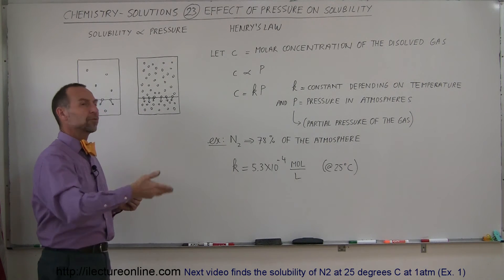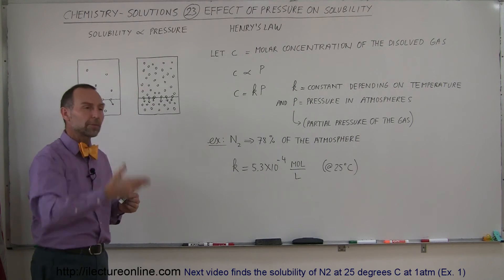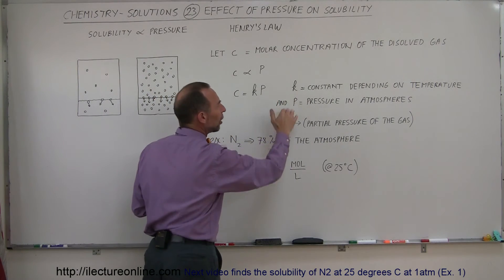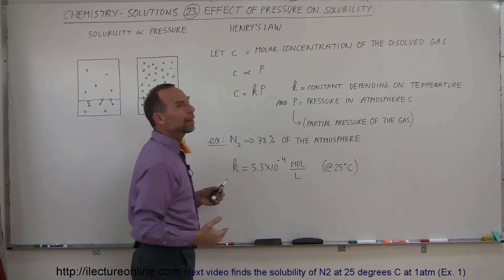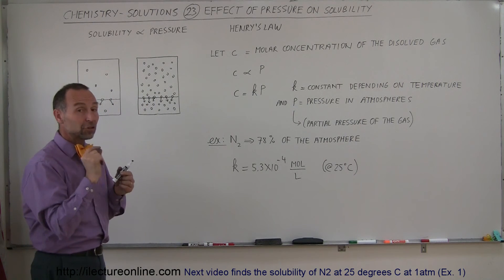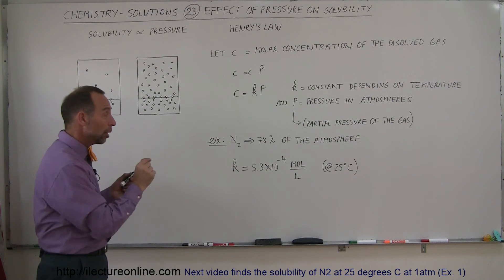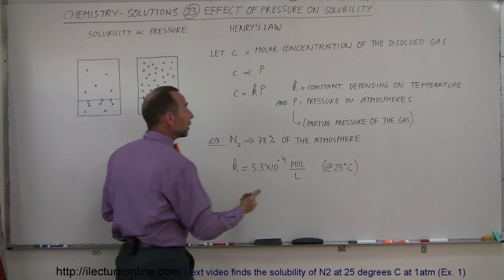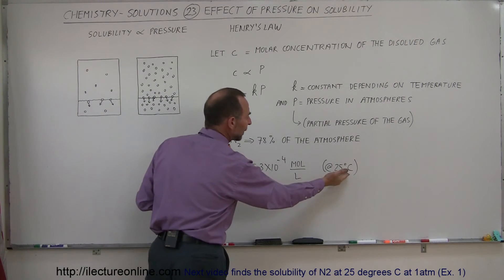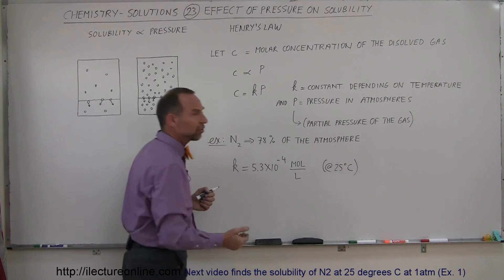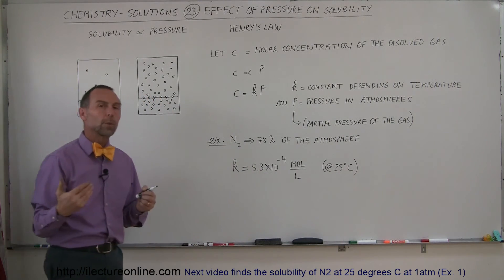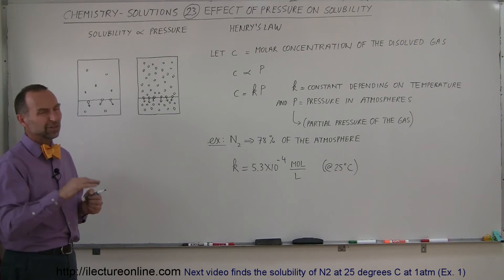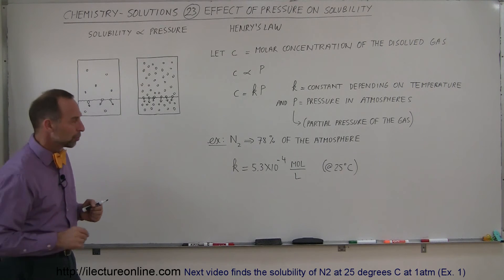As the temperature goes down, the solubility goes up; as the temperature goes up, the solubility goes down. So K, the solubility constant, also depends on temperature, and we always have to state what temperature we're at when given a value of K. Typically, they like to express K at 25 degrees Celsius, which is considered about room temperature.